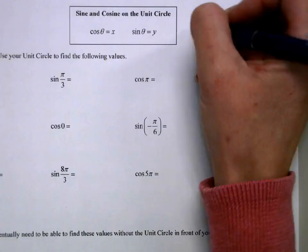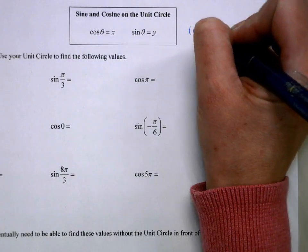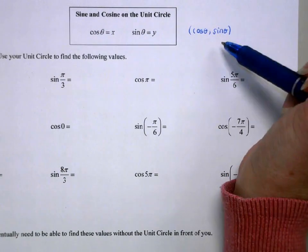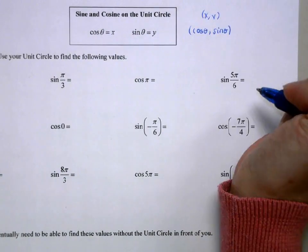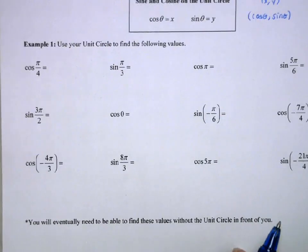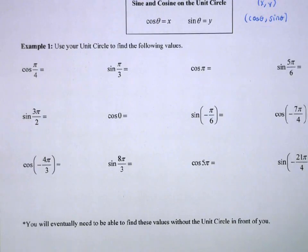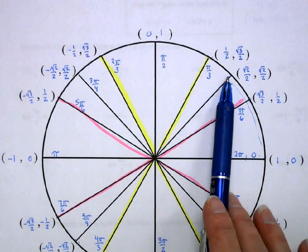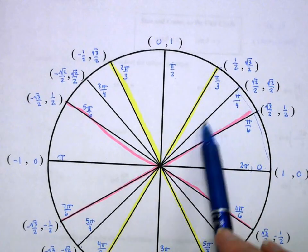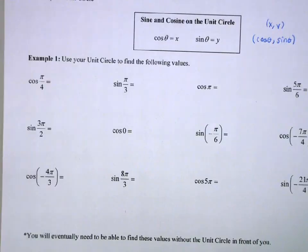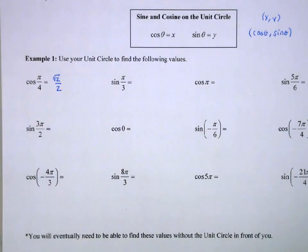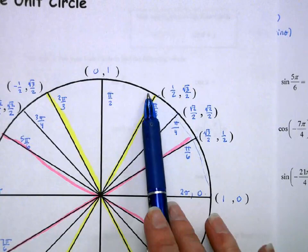One way to remember: cosine and sine are in alphabetical order, just like the coordinates x and y. So if I want the cosine of π/4, I find the angle π/4 on the unit circle and take the x-coordinate, which is √2/2. For sine of π/3, I go to π/3 and find the y-value, which is √3/2.